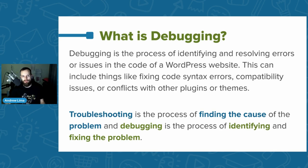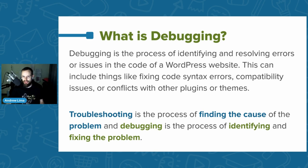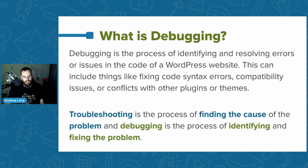To start off, what is debugging and what is the difference between troubleshooting and debugging? Troubleshooting is the process of finding the cause of the problem, and debugging is the process of identifying and fixing the problem. I had to do a little Googling to make sure I got my descriptions right because they can seem like the same thing, but they're not.